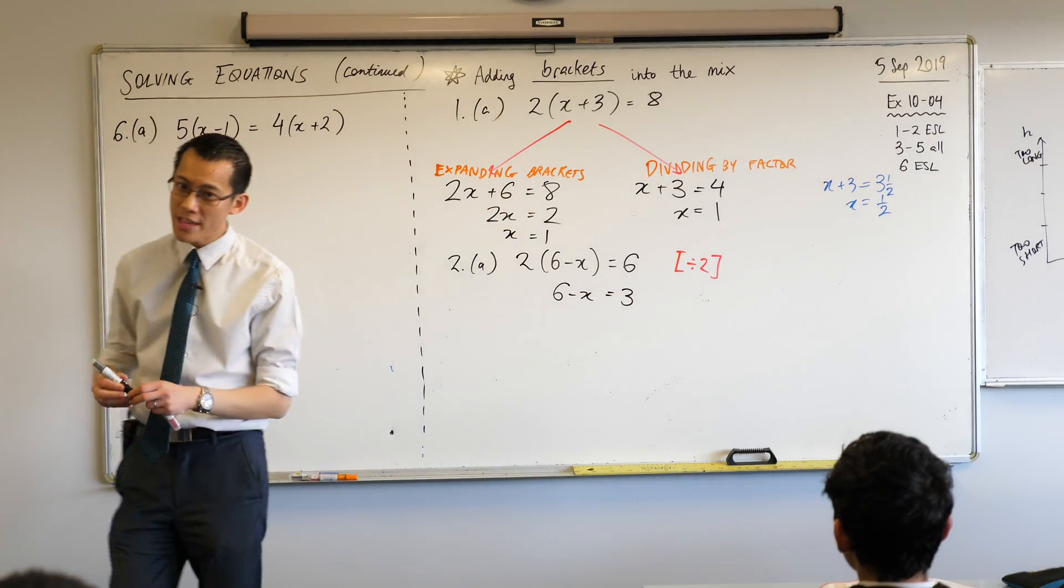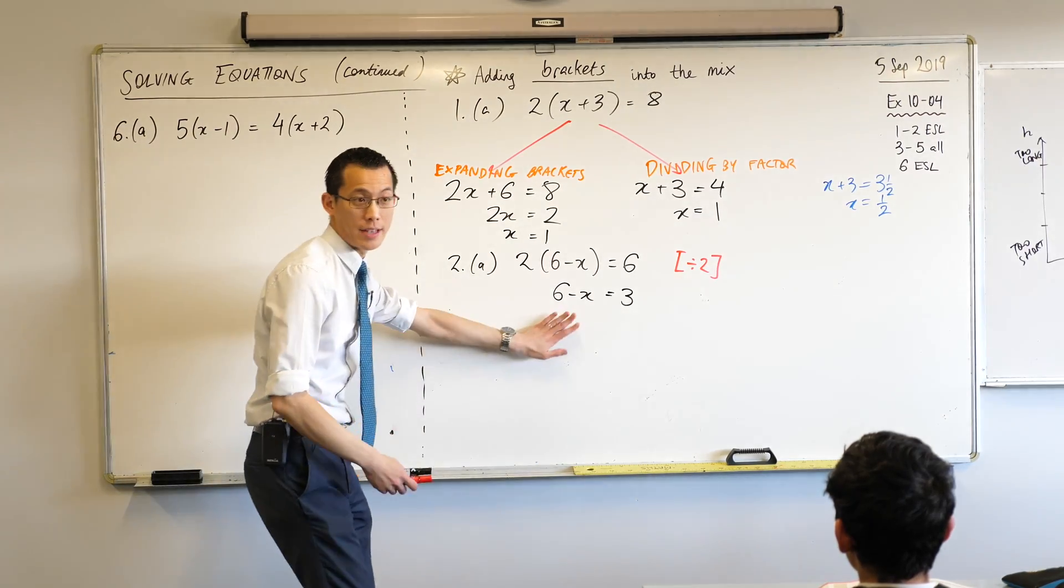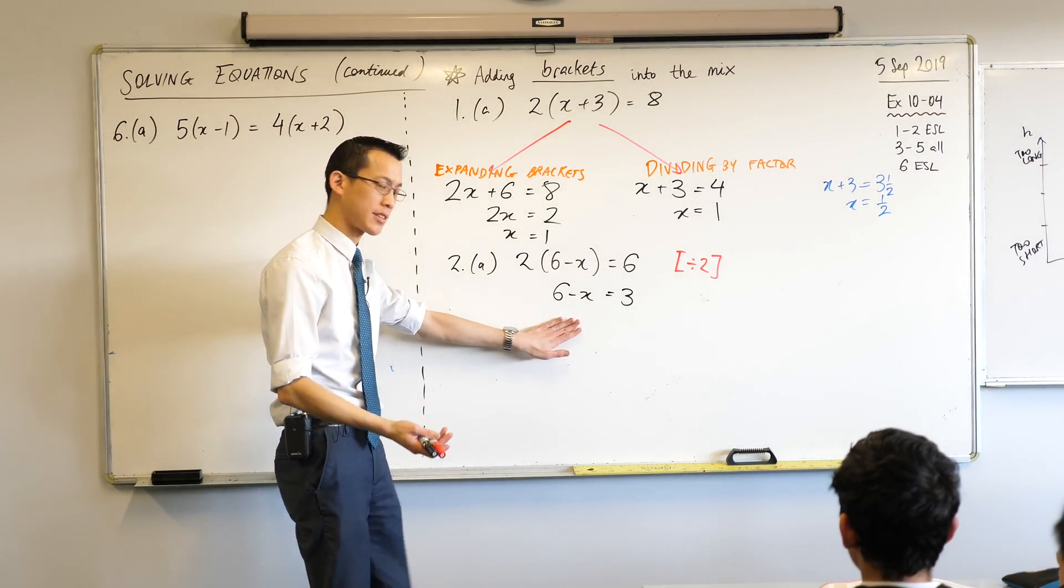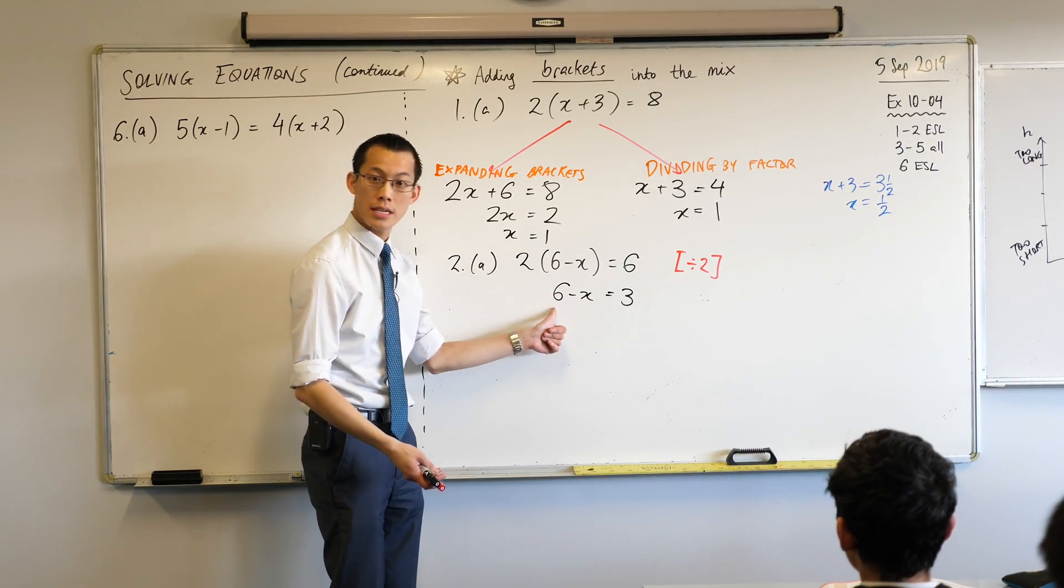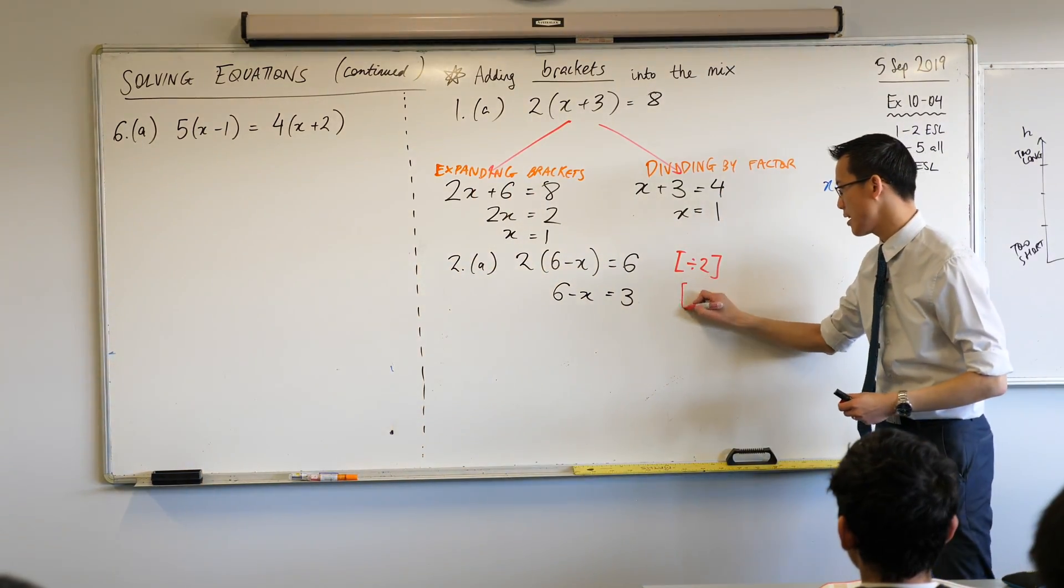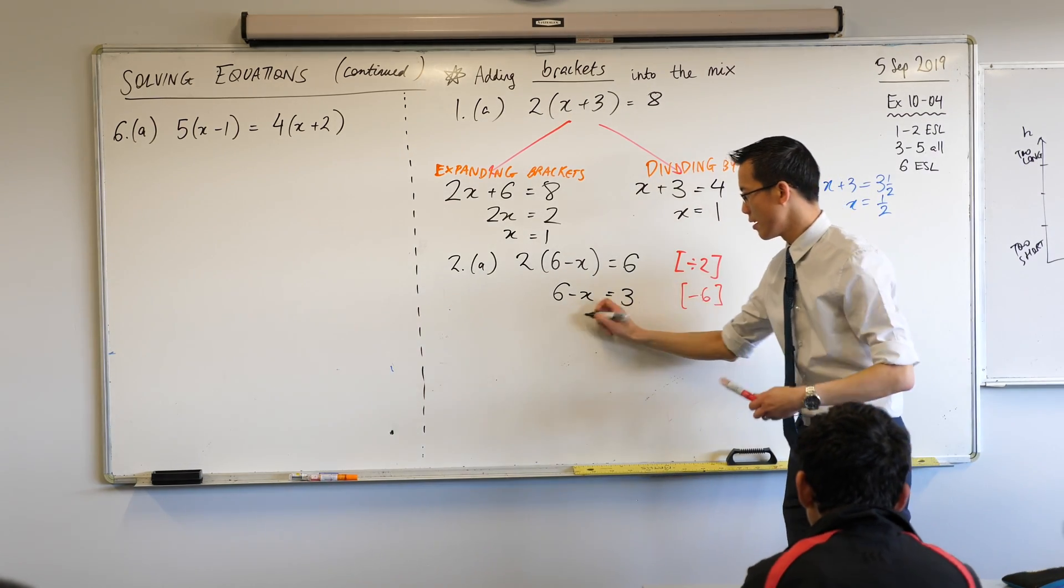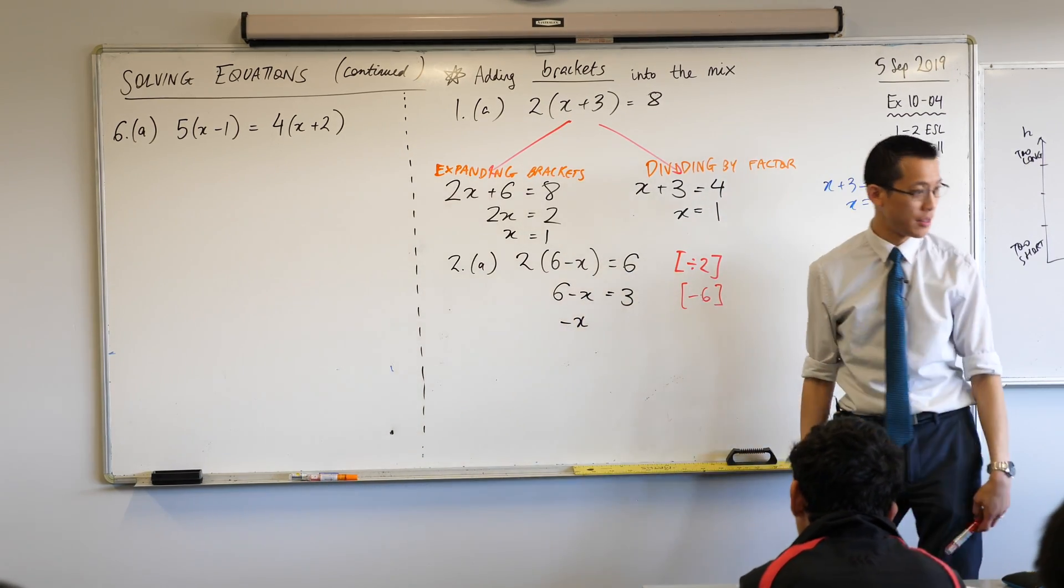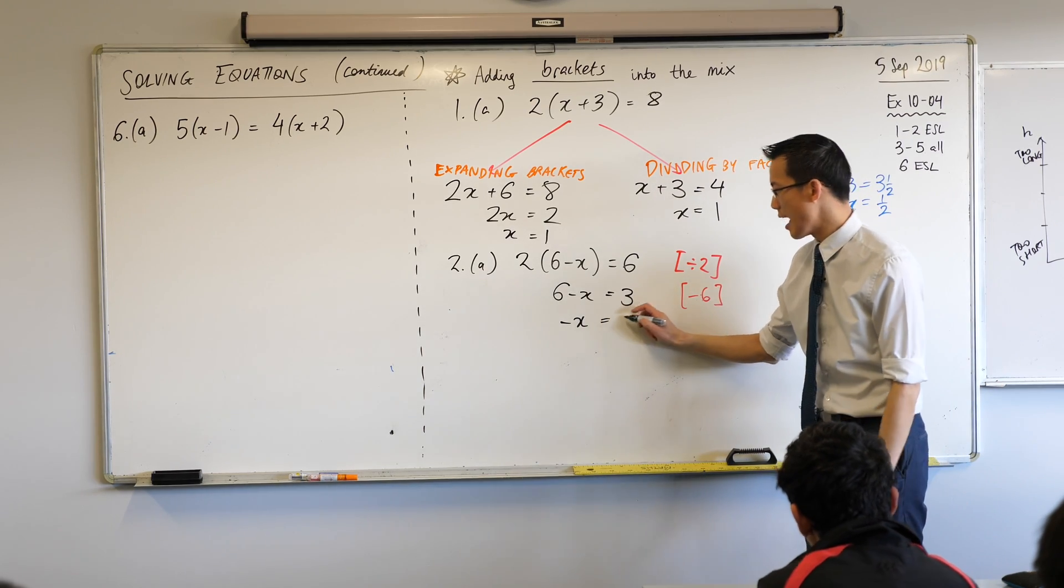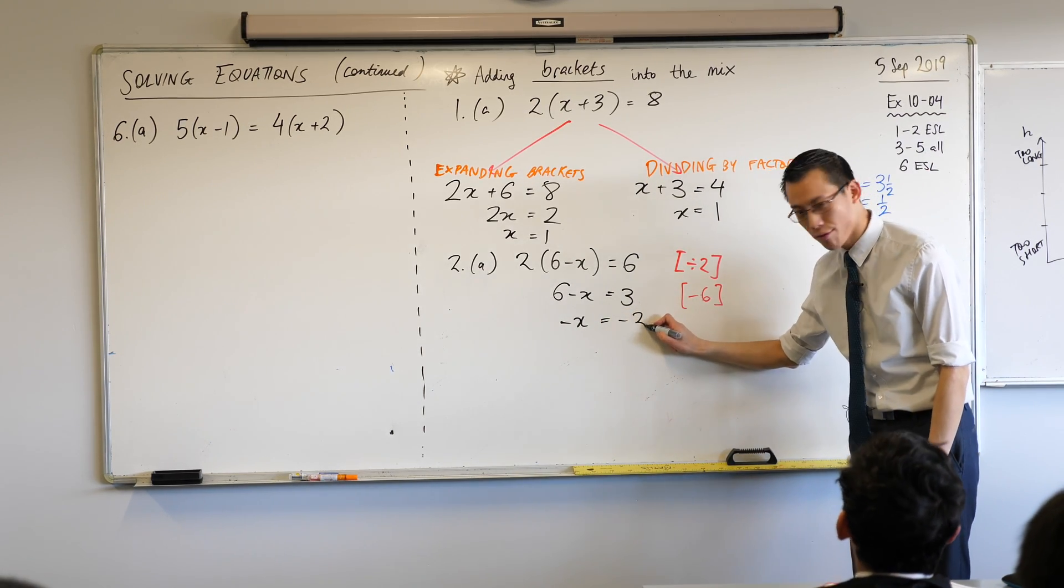Now at this point remember what I try to get is the pronumeral by itself on the left-hand side. So the thing that's in the way of that is currently a 6. What should I do to get rid of it? I'll subtract 6 from both sides. So that leaves me with the negative x on that side, and then 3 take away 6 is negative 3.